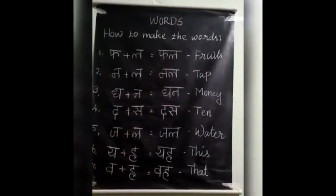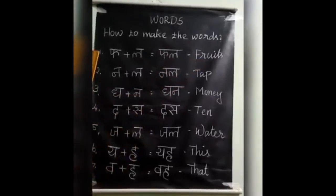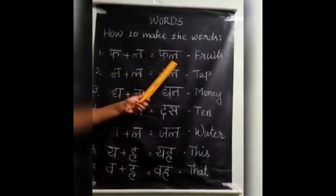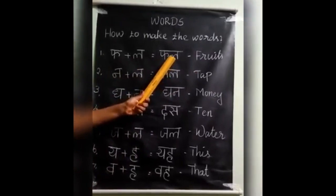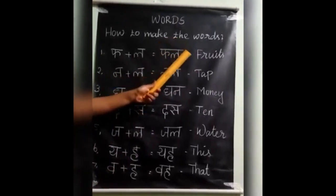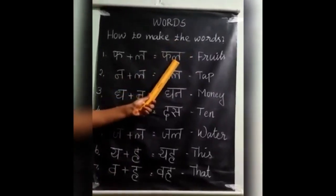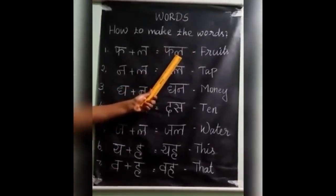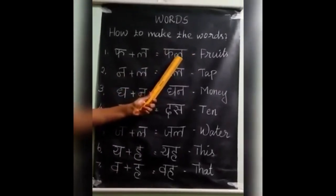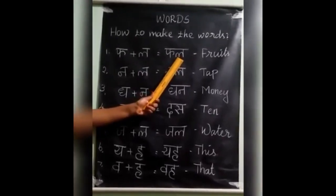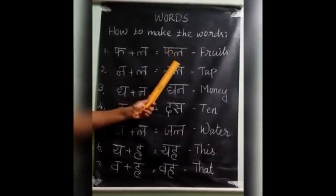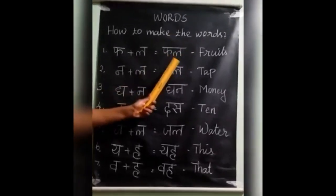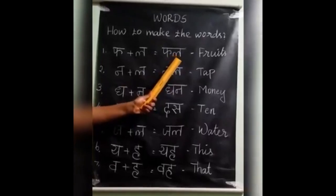Ok children, do you understand? Are you clear? Listen. When there is no long sound at the end of the word, the last sound 'a' is not pronounced. So this letter is pronounced as 'fal'.